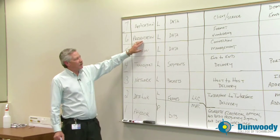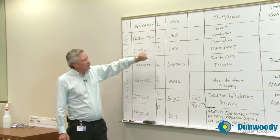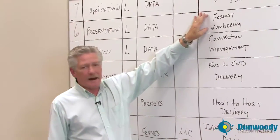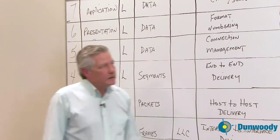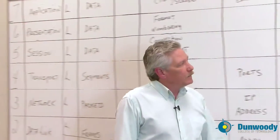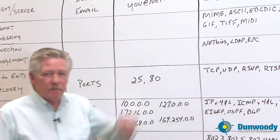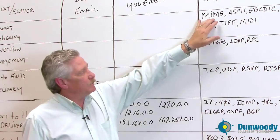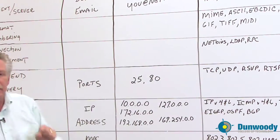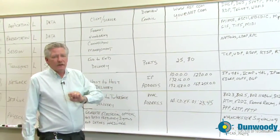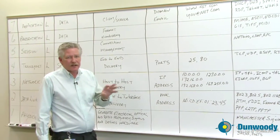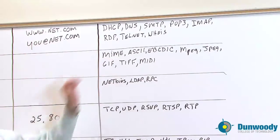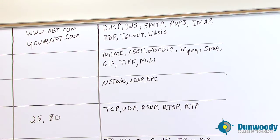The presentation layer really is what it says it is. It's logical, and its PDU is data. It does formatting and encoding. Anybody who has ever sent an email with more than just text uses MIME. MIME takes pictures, music, whatever, and turns it into a text-based format so the email can be sent, and then reconstructs it on the receiving computer.